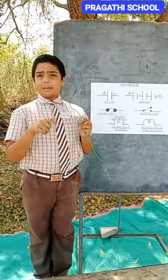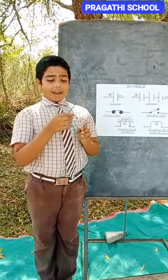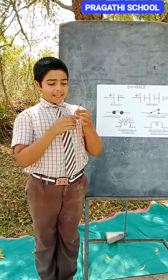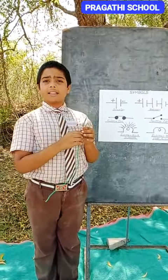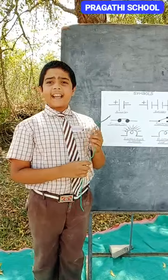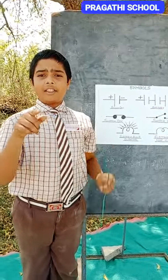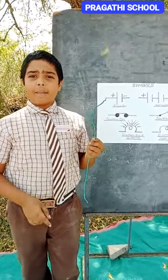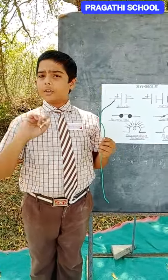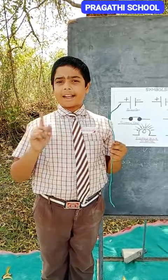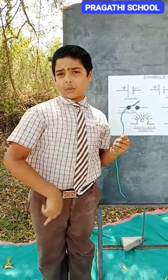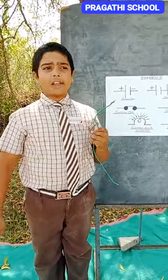Do you know what is meant by wire? A wire has a plastic coating outside — it is an insulator. Do you know what is meant by insulator? The materials which do not allow electric current to pass through them are called insulators.